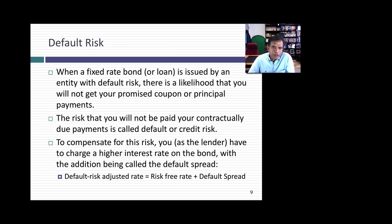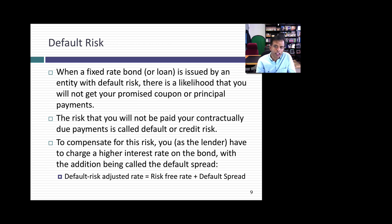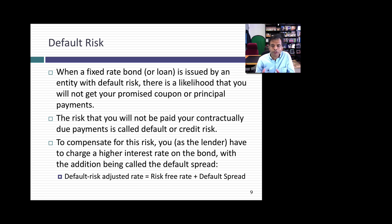Now let's introduce the notion of default risk. When the contract is written, the promisor agrees to pay you what's in the contract, but if you have a promisor who can default, you will not pay as much for that same bond as for an equivalent bond with no default risk. The question is, how do you bring that risk into the process? When you try to value a bond, you still keep the promised cash flows. But when I discount those cash flows, I discount them back not at the risk-free rate, but at a rate that reflects both the risk-free rate and the default risk — and the additional amount added to the risk-free rate to cover the default risk is called the default spread.